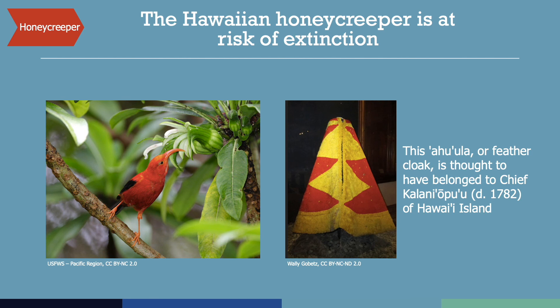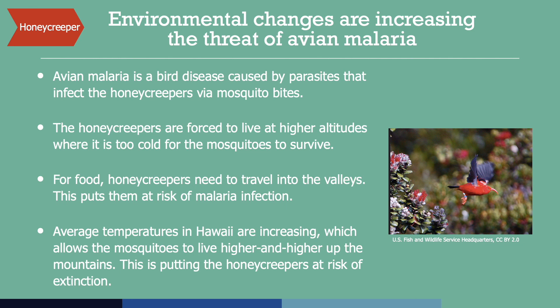Hawaiian honeycreepers are colorful birds that are culturally important to the indigenous people of Hawaii. They are at risk of extinction, in part because their habitat is being destroyed by human activity. Another threat to the survival of these birds are mosquitoes that carry an avian form of malaria. Avian malaria is a bird disease caused by parasites that spread to the honeycreepers through mosquito bites. Since the introduction of mosquitoes and avian malaria to the Hawaiian islands in the 1800s, honeycreepers have been forced to live at higher altitudes, where the temperatures are too low for the mosquitoes to survive. However, to gather food, the birds have to travel into the valleys where they are at risk of malaria infection. With average annual temperatures increasing in Hawaii, mosquitoes are now able to survive at higher and higher altitudes, shrinking the honeycreepers' habitat even further and bringing them to the brink of extinction.